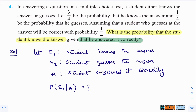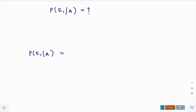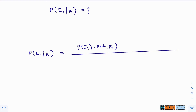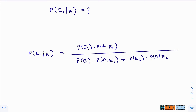We need to calculate P(E1|A). The formula for P(E1|A) by Bayes' theorem is: P(E1) × P(A|E1) divided by [P(E1) × P(A|E1) + P(E2) × P(A|E2)], since there are two events in this question. You need to calculate P(E1), P(E2), P(A|E1), and P(A|E2) — four things in total.